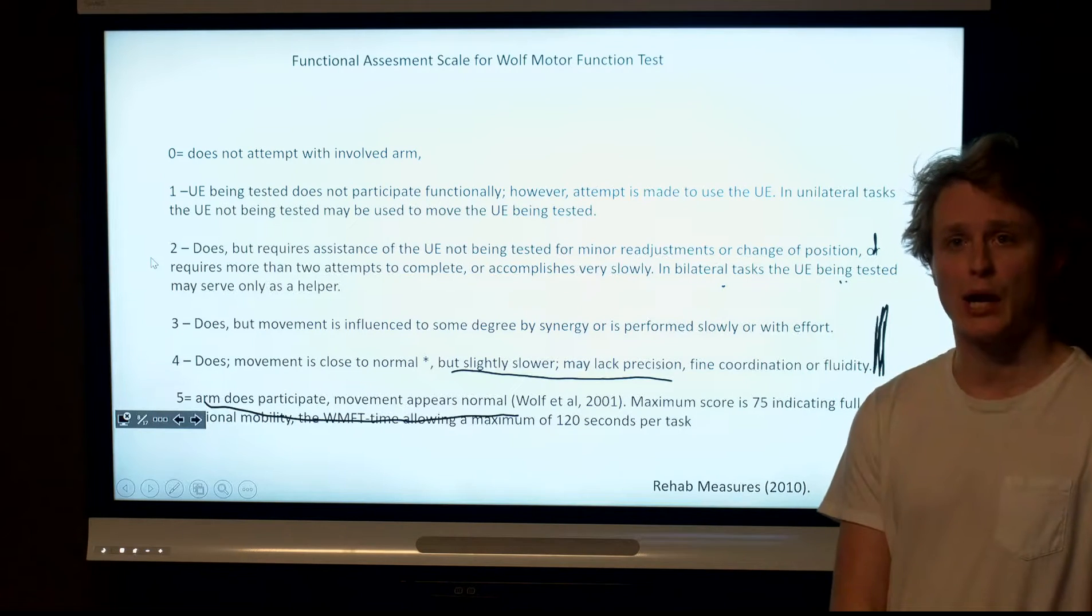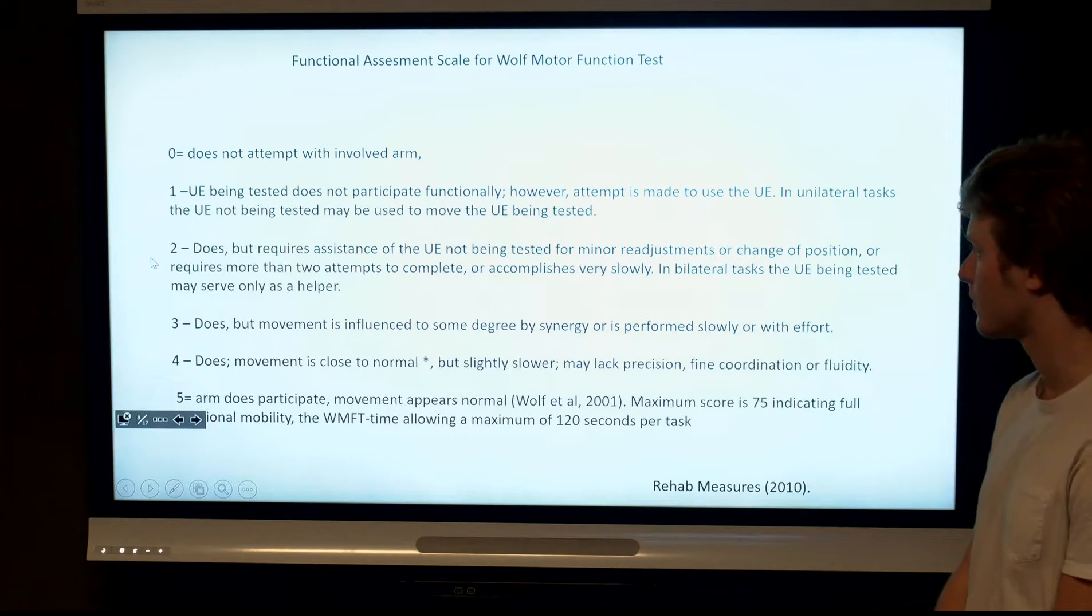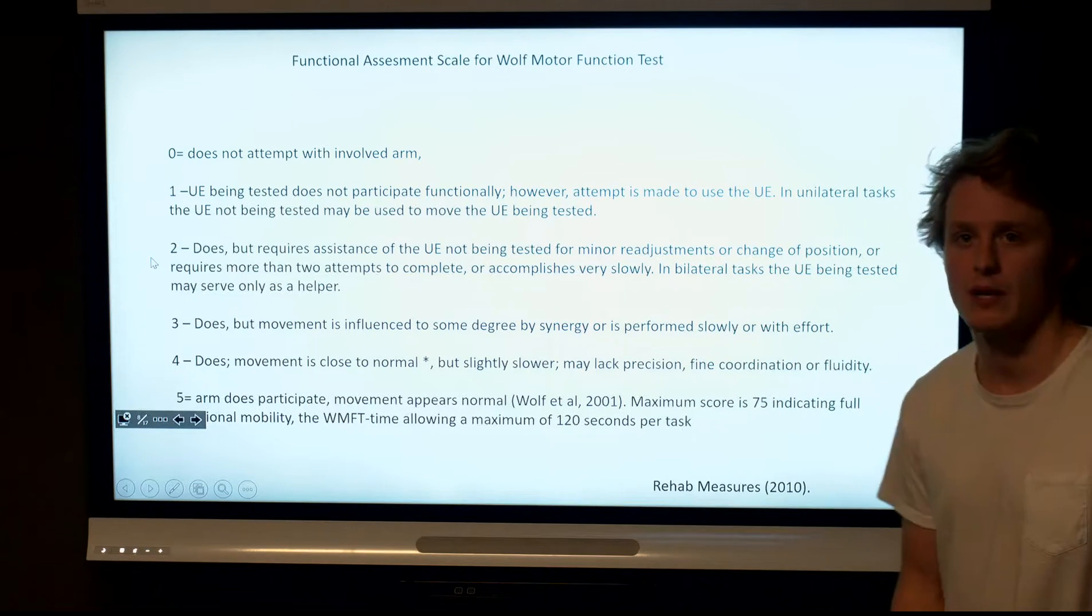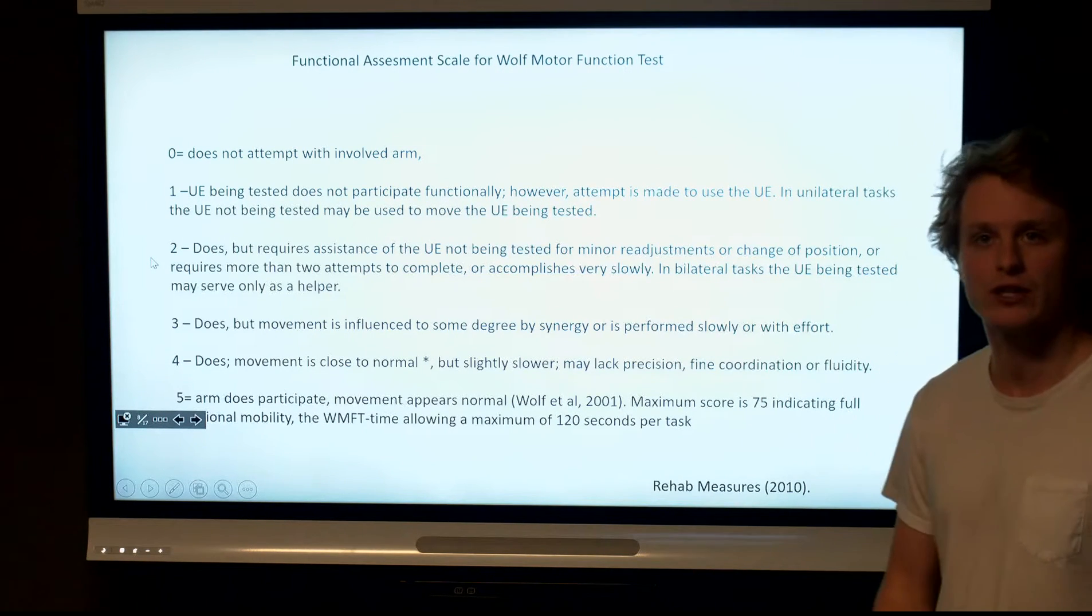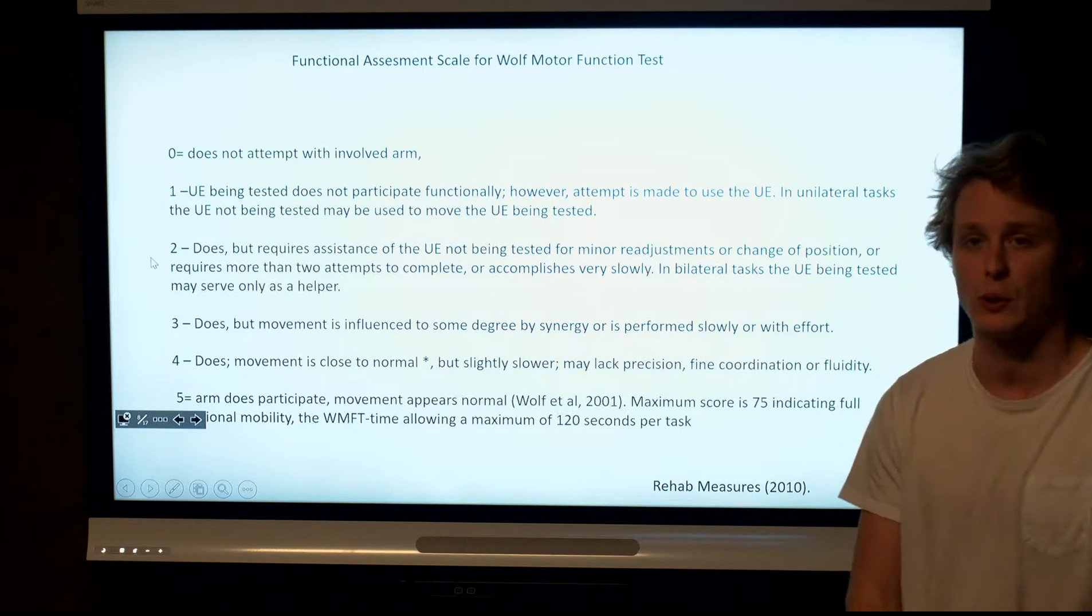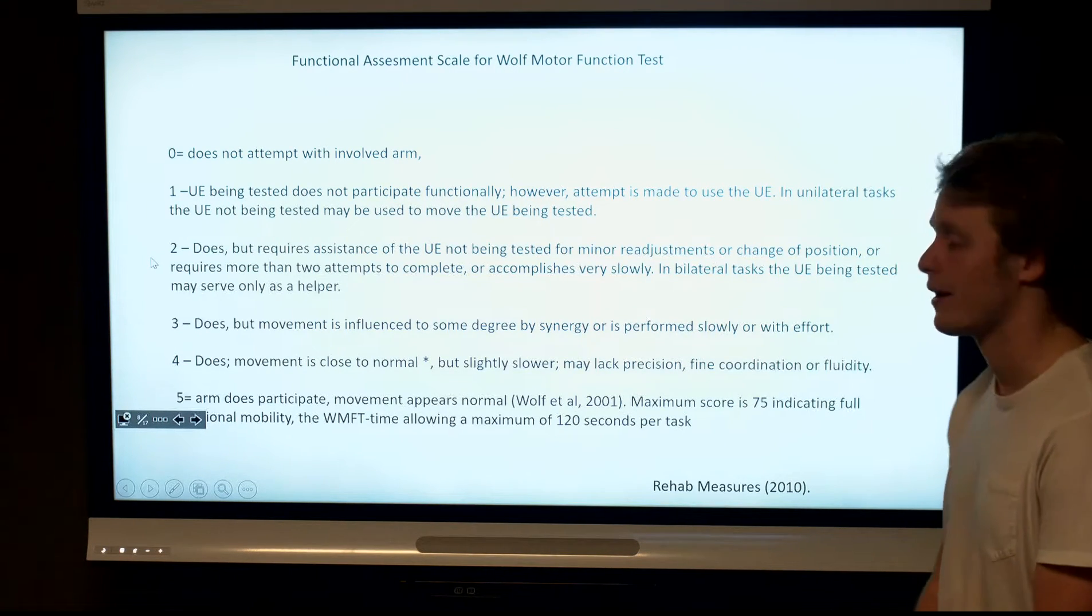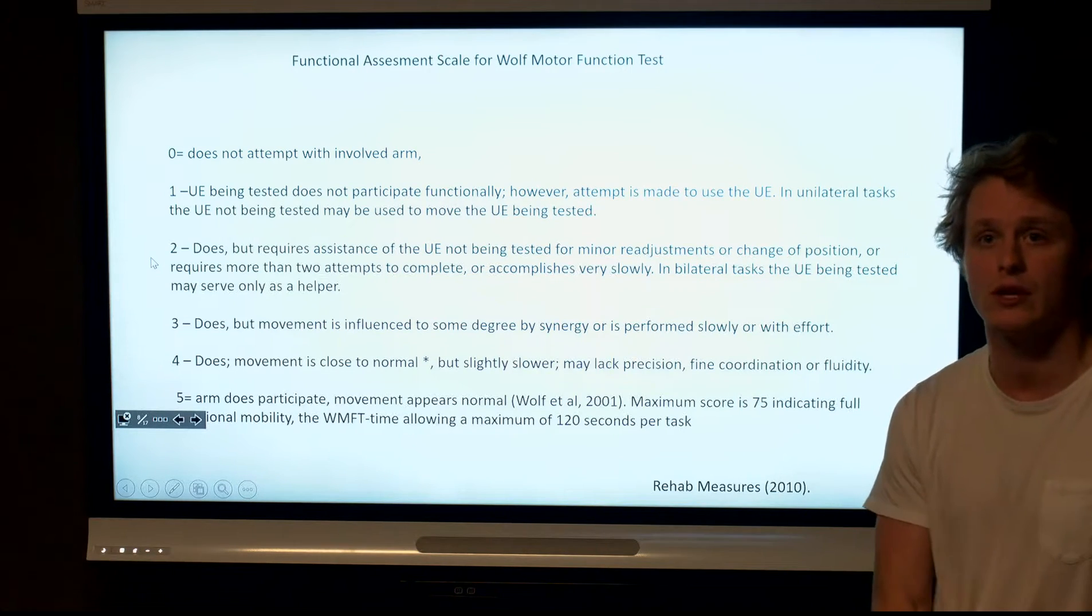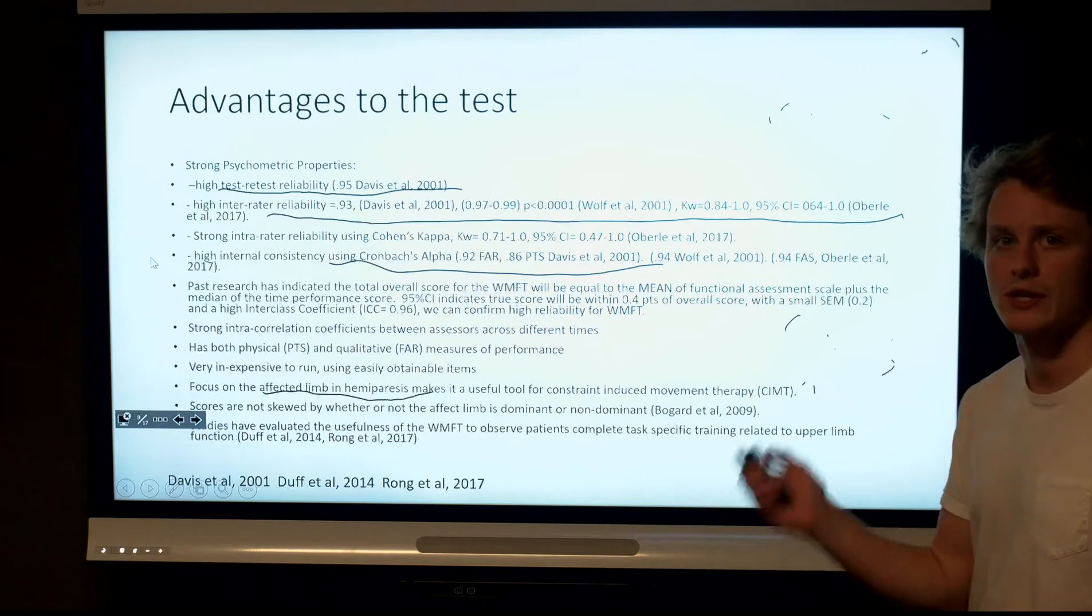This is the functional assessment scale. You've got zero at the top here being does not use the involved arm at all, and five being the arm completely participates. We expect from my client, Mr. Johnson, that he would range somewhere between three to four, being that the movement is relatively normal but it's slower and lacks precision. This kind of ordinal data is really useful to help occupational therapists understand where clients are at in terms of their motor function immediately following a stroke. That's why it's evidence based for acute and subacute stroke settings.